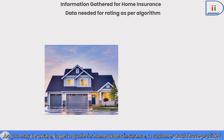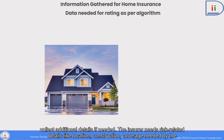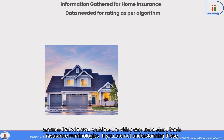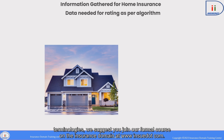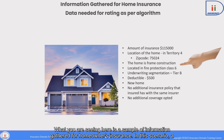To get a quote for homeowners insurance, a customer would have provided the necessary details through an application, phone call, digital means, or online mode. The insurer may also collect additional details if needed. The insurer needs risk-related details like location, construction, coverage needed by the insured, deductible opted for, etc. We assume that whoever watches the video can understand basic insurance terminologies. What you are seeing here is a sample of information gathered for homeowners insurance.